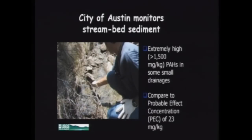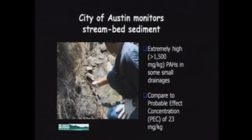They were concerned. They saw some broken-up asphalt at the top of the drainages and thought maybe it was the asphalt. As a comparison, that concentration of 1,500 milligrams per kilogram — also referred to as parts per million — is far above the probable effect concentration, which is the concentration at which we would expect to see adverse effects on aquatic biology, at 23 milligrams per kilogram. So that 1,500 sent up some red flags.